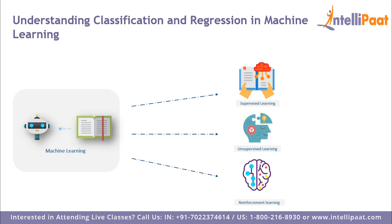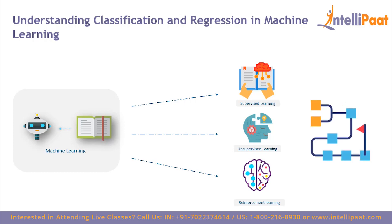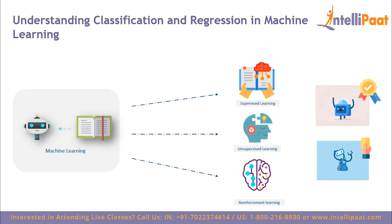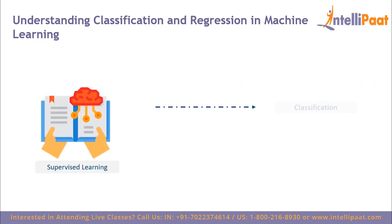In reinforcement learning, machine learning models are trained to make various decisions. The agent learns to reach a goal in an uncertain and potentially complex environment. The computer uses trial and error, and the AI receives rewards or penalties for actions it performs, with the main goal being to maximize the total reward.